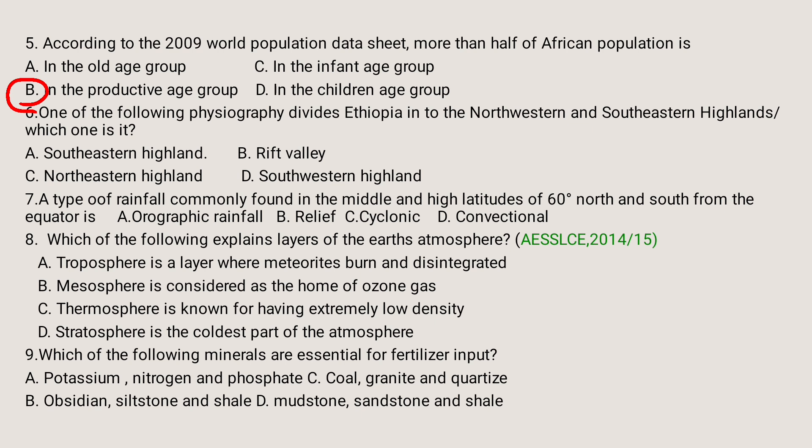Which one of the following physiographic features divides Ethiopia into Northwestern and Southeastern Highlands? A) Southeastern Highland, B) Northeastern Highland, C) Rift Valley, D) Southwestern Highland. The Rift Valley is the physiographic feature that divides the Ethiopian Highlands into Northwestern and Southeastern Highlands. So the answer is C.